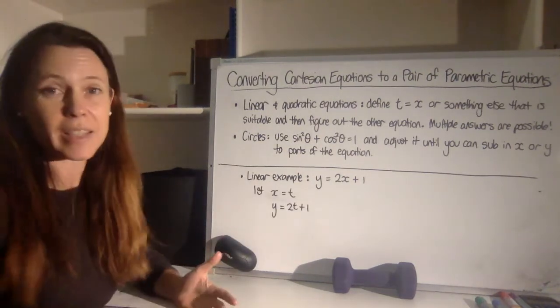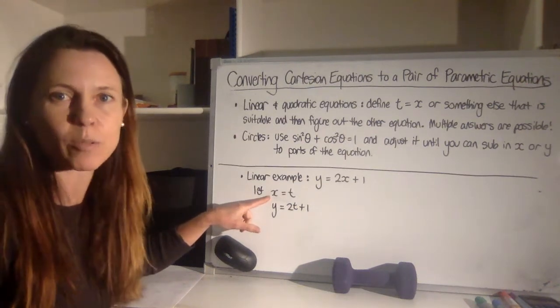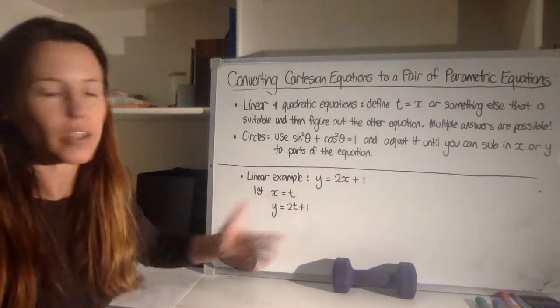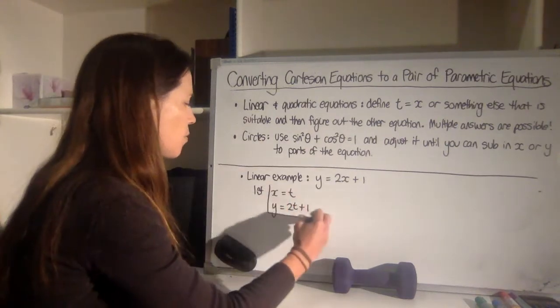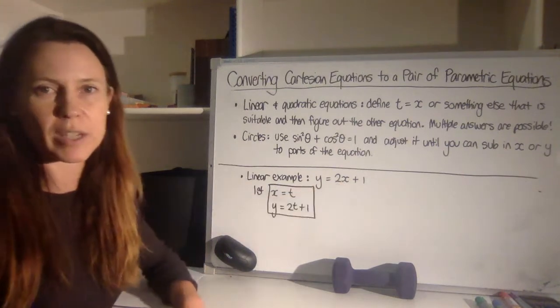So a linear example then, and it doesn't get much easier than this, we can literally just say let's let x equal t. And then we can rewrite y and instead of writing the x, we can just write t. And that's the simplest possible way to get a pair of parametric equations out of a Cartesian equation like this.